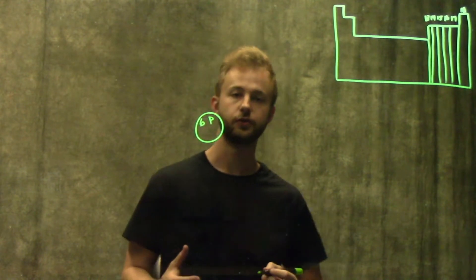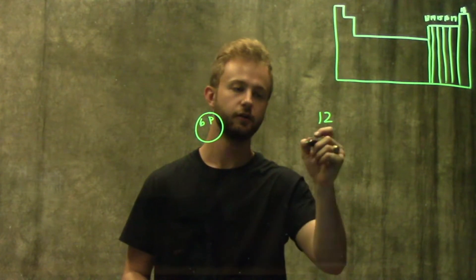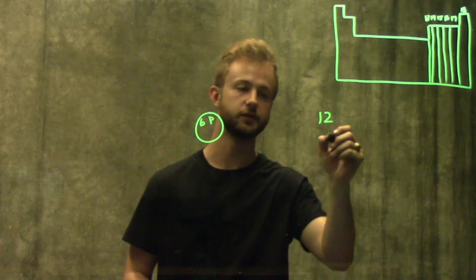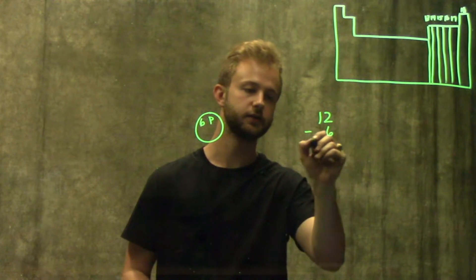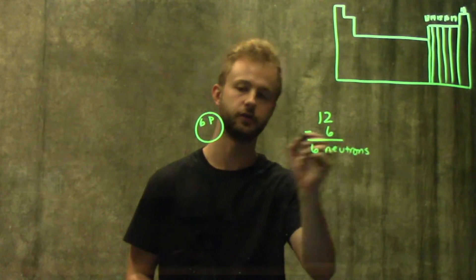We also know that we can figure out the number of neutrons in the nucleus of an atom by subtracting the atomic number from the atomic mass, which for carbon is 12 minus six. So we have six neutrons also in our nucleus.